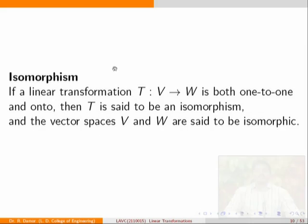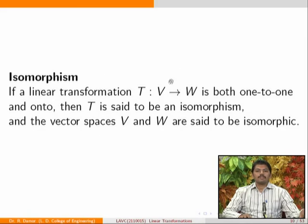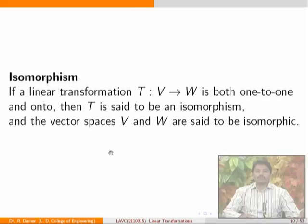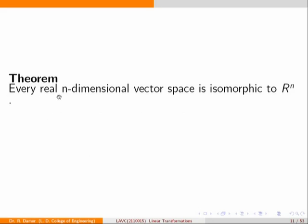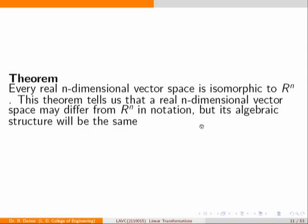In our last lecture we defined isomorphism. A transformation T from V to W that is both one-to-one and onto is called an isomorphism, and V and W are said to be isomorphic. We also showed that every real n-dimensional vector space is isomorphic to Rn, so the algebraic structure of any n-dimensional vector space is the same as that of Rn.